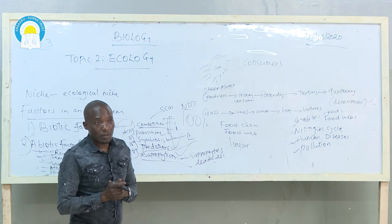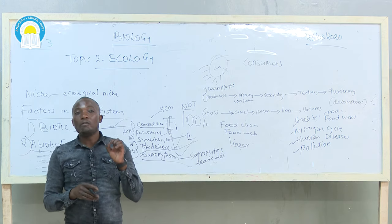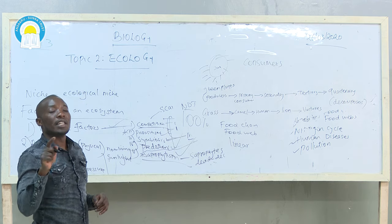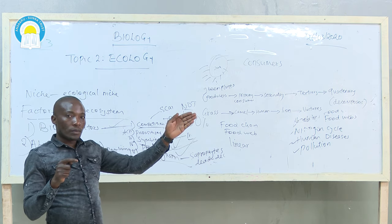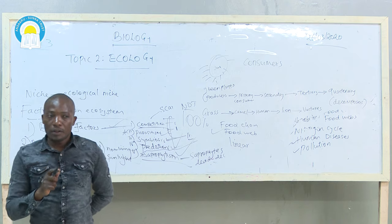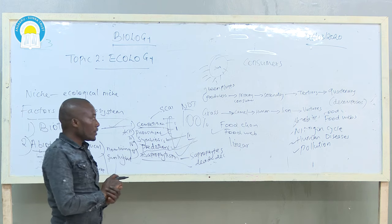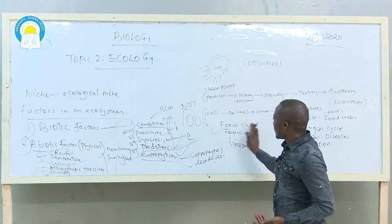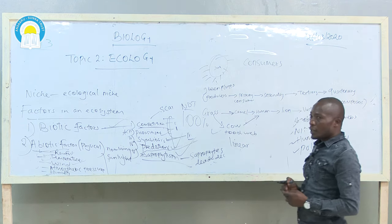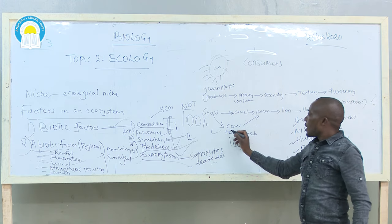The energy flow in an ecosystem can be represented by a food chain or a food web. A food chain is a linear representation of feeding relationships in an ecosystem, using arrows that show the direction of energy flow. A food web consists of several interconnecting food chains in an ecosystem — for example, grass eaten by a cow or camel, humans feeding on different animals — making up the food web.